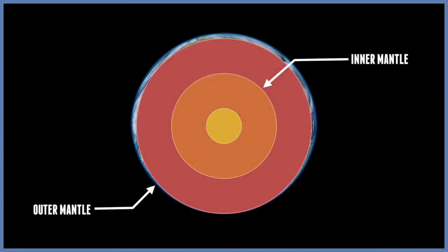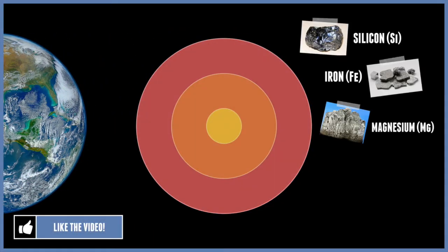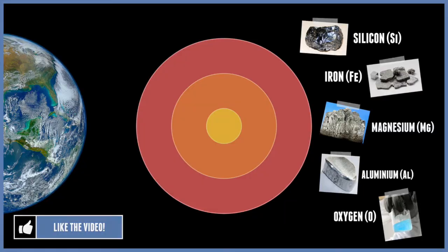Above the core is the Earth's mantle. This consists of silicon, iron, magnesium, aluminum, oxygen, and other minerals.